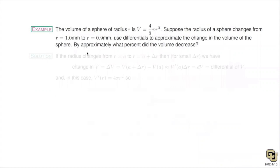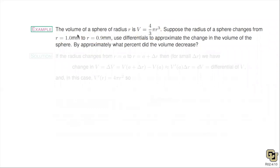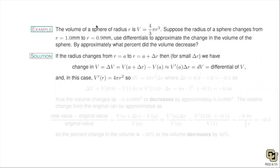This is a classic differentials problem. Every differentials problem starts with some original value — here a radius of 1 millimeter — then the value changes to a new value, here 0.9 millimeters. So r decreased. Now we ask: if the radius changes, how is that going to affect the volume of our sphere? Obviously we expect the volume to decrease, but exactly by how much?